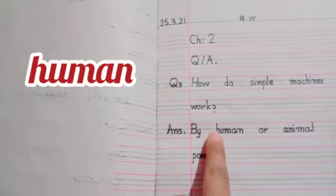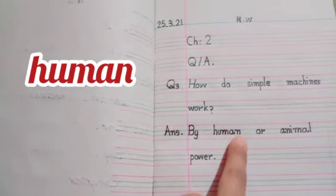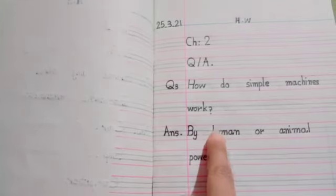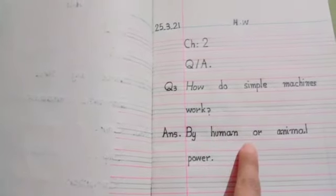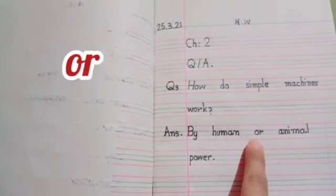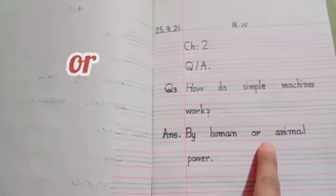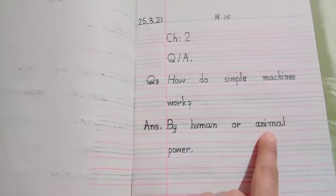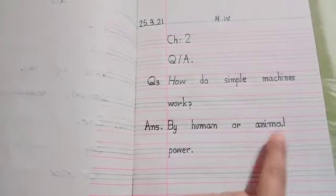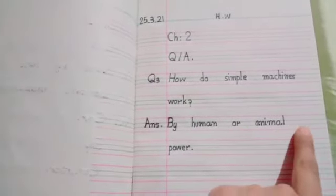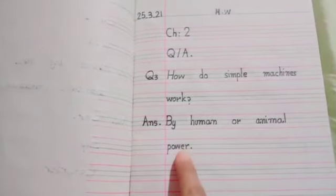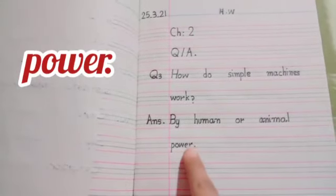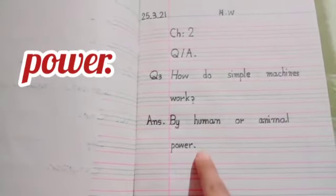And again take one finger distance, write O-R or. And again take one finger distance and write A-N-I-M-A-L animal. By human or animal. Now we write in the next line: power, P-O-W-E-R power, then put your full stop. Answer is complete.